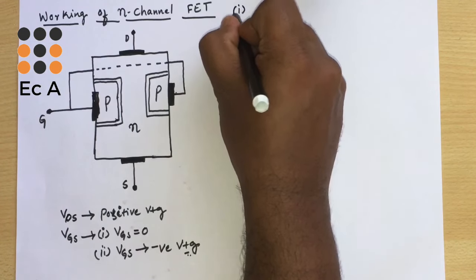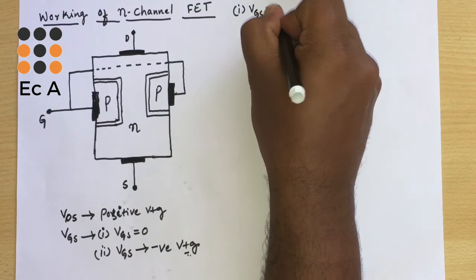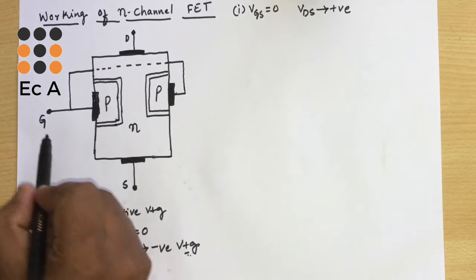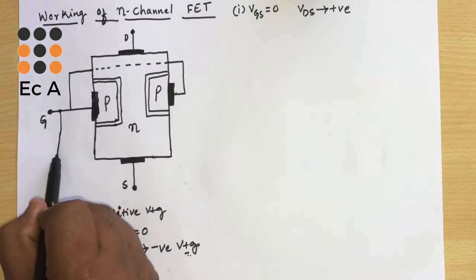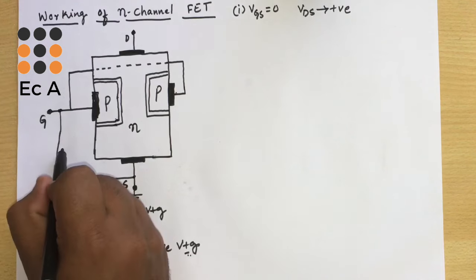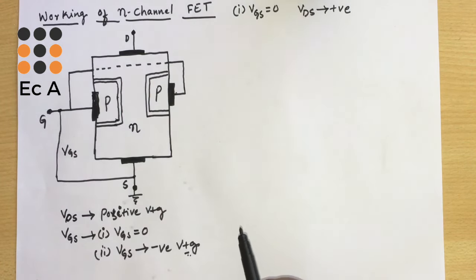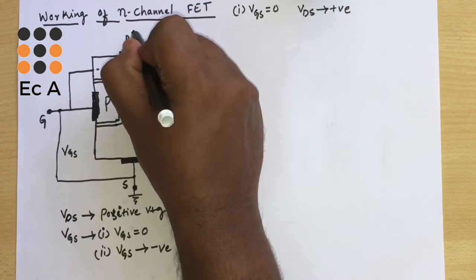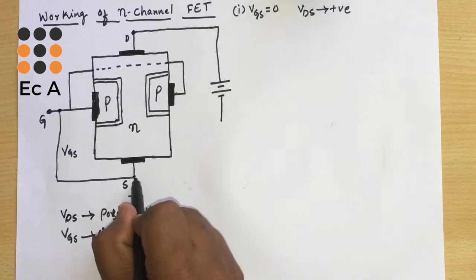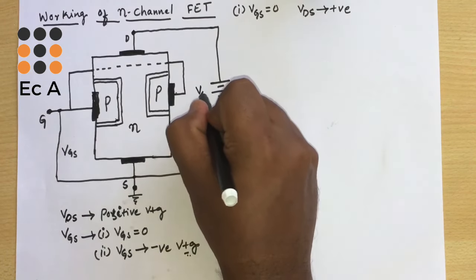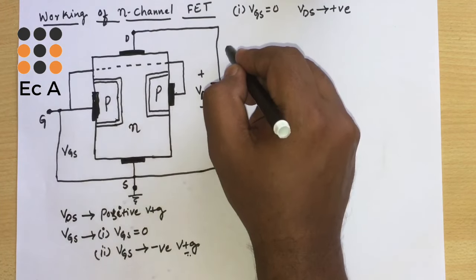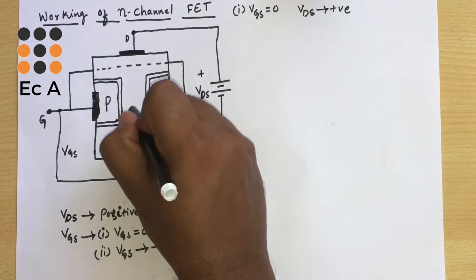Let us consider the first case where VGS is equal to zero and VDS is made some positive voltage. We connect a wire from gate to source to short them, then connect ground to source — this makes VGS zero. We then connect a positive voltage source between drain and source, making VDS positive.